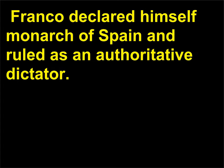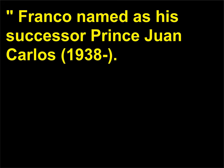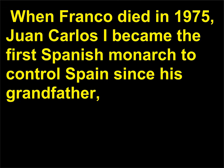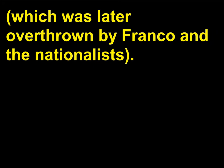In 1947, with the fighting in Europe over, Franco declared himself monarch of Spain and ruled as an authoritative dictator. Two years before he died, he stepped down as head of state, though he retained the title Generalissimo, meaning commander-in-chief. Franco named as his successor Prince Juan Carlos, 1938. When Franco died in 1975, Juan Carlos I became the first Spanish monarch to control Spain since his grandfather, King Alfonso XIII, 1886–1941, was deposed in 1931 to make way for the brief republic, which was later overthrown by Franco and the nationalists. King Juan Carlos played an important role in transforming Spain into a modern democracy.